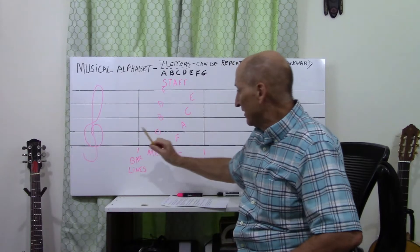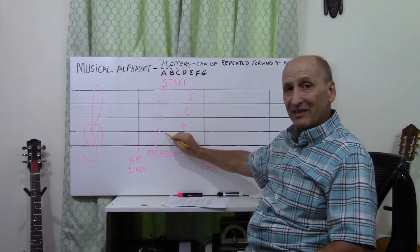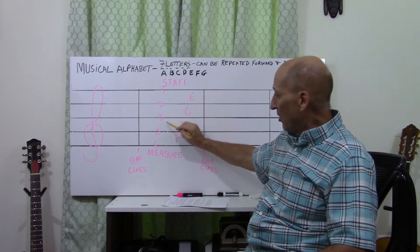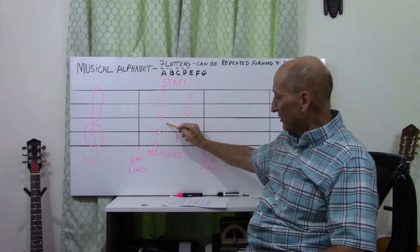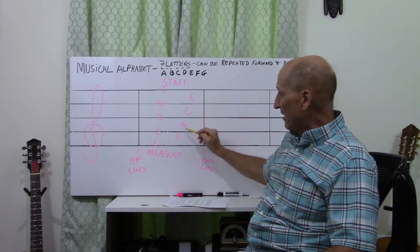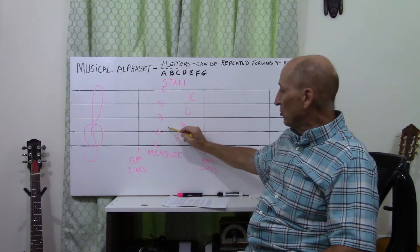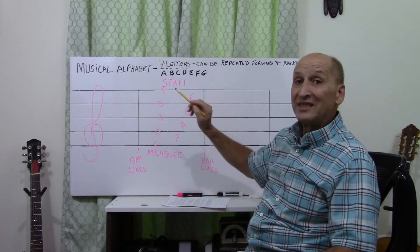The symbol gives the second line the name G. Once you know that, you start G. If the note is the space above, you know it's going to be A. If the note is on this line here, you know that you could go G, A, B, C. The note is D.